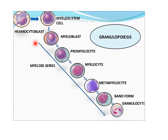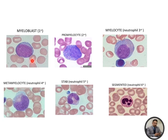Here you can see the process of granulopoiesis starting from the pluripotent hematopoietic stem cell. It divides into two forms: lymphoblastic and myeloblastic. This is the myeloblastic stage, then myeloblast, promyelocyte, and then granulocyte. These are the shapes or morphology of the cells as we can see under the microscope. The myeloblast is a large cell with high nucleus-to-cytoplasm ratio and open chromatin.